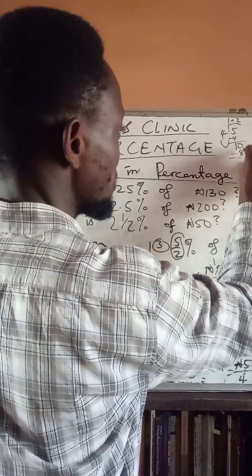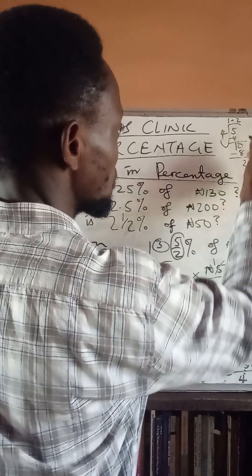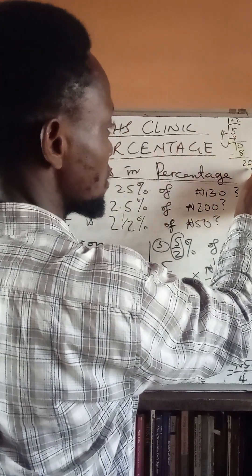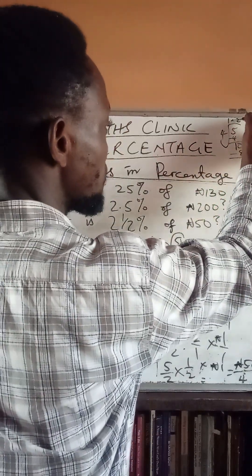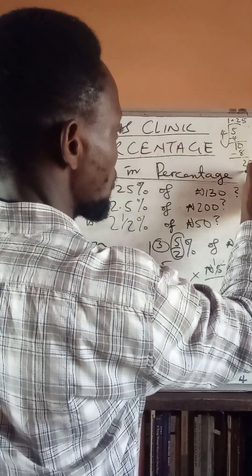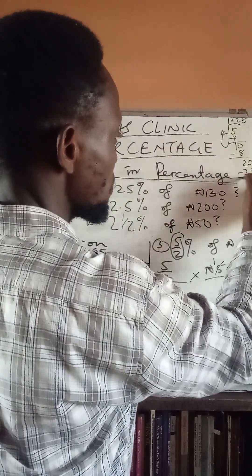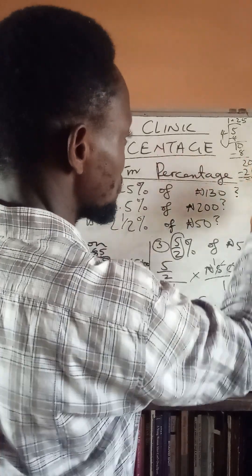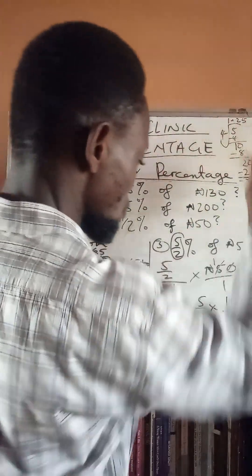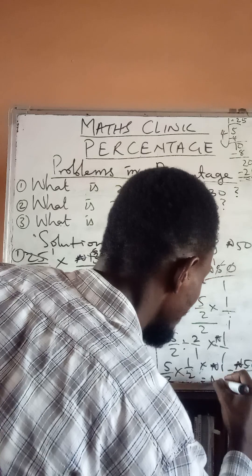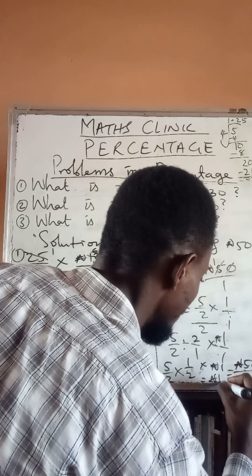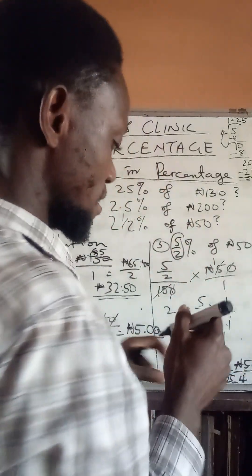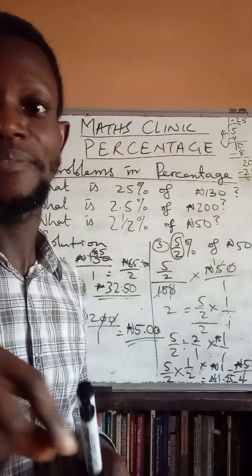Put 0 to make it 20; 4 into 20 gives 5; 5 times 4 gives 20; take 20 from 20 gives 0 — no remainder. So the final answer is 1 naira 25 kobo. Thank you.